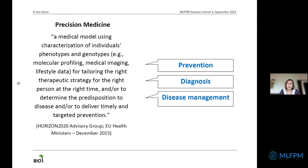If we want to characterize precision medicine — what is it? We know it's a medical model using characterizations of individuals' phenotypes and genotypes for a multitude of purposes. It's not only about disease management in the sense of post-disease diagnosis follow-up, but also about personalizing risk assessments, maybe prior to disease onset, and delivering person-optimized diagnosis.